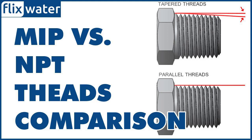These fittings are threaded, meaning they have spiral grooves, much like a screw, that twist into a pipe. The threads on all NPT fittings are at a 60-degree angle, making them easy to install with most pipes. MIP fittings are also threaded at a 60-degree angle, so they fall under the umbrella of NPT threads.